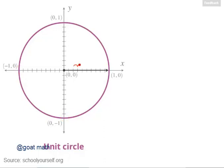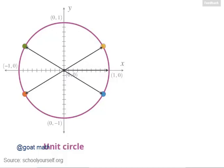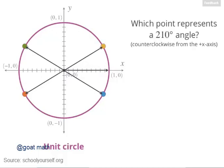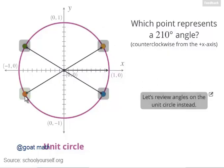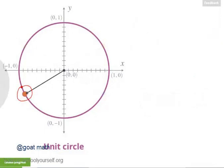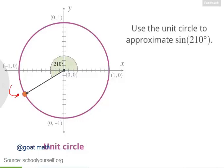Let's also add some tick marks that are separated by 0.1. To start things off, let's look at 4 points at different angles on the unit circle. Which of these points represents a 210 degree angle? Remember that angles on the unit circle are measured in the counterclockwise direction from the positive x-axis. If you want to review instead, then click down here. This point over here represents a 210 degree angle on the unit circle. Try using this point's x- or y-coordinates to approximate the sine of 210 degrees.